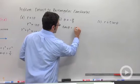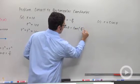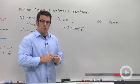And I get tangent theta equals tangent of negative pi over 4. And the tangent of negative pi over 4 is negative 1.